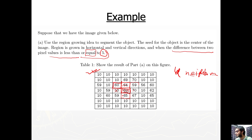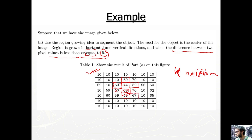Next, we move to pixel 64 and compare its neighbors. The current pixel is 64 (not the starting pixel). We compare 64's neighbors: 59 — the difference between 64 and 59 is 5, which satisfies the criteria. Checking 69: the difference is 5, so 69 is also evaluated. We then visit pixel 65 and check its neighbor 59, then neighbor 67.